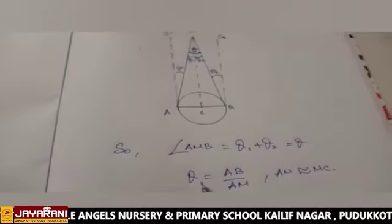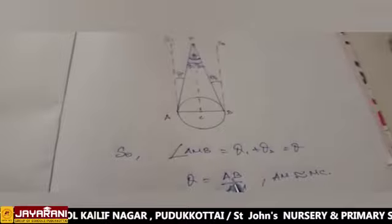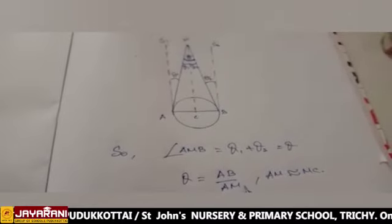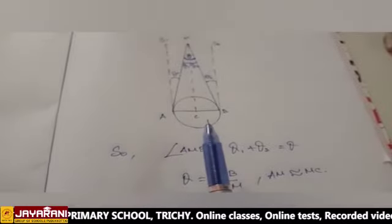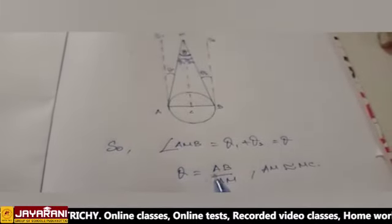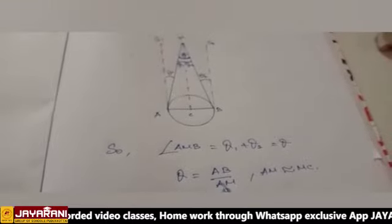If we want to find out theta, which is equal to AB by AM. Here also, we have to consider this is an arc. So, AB is the base. So, theta is equal to AB by AM. Then, the AM value is approximately equal to MC.